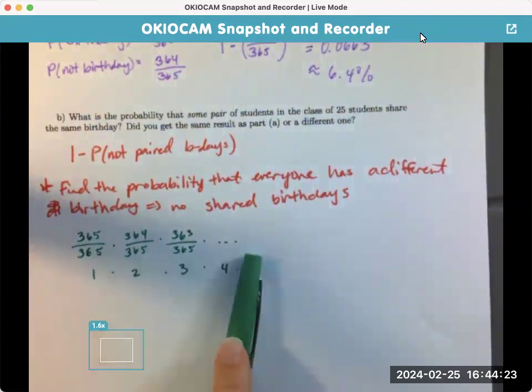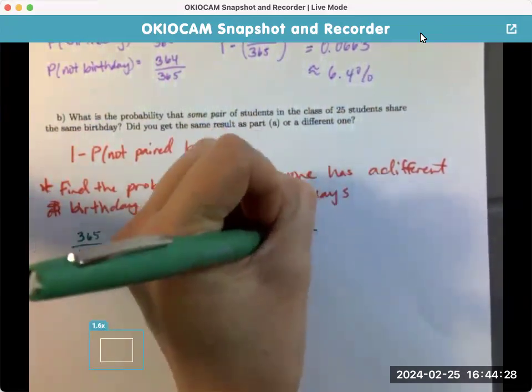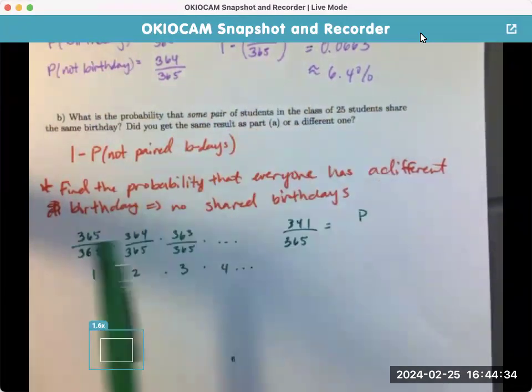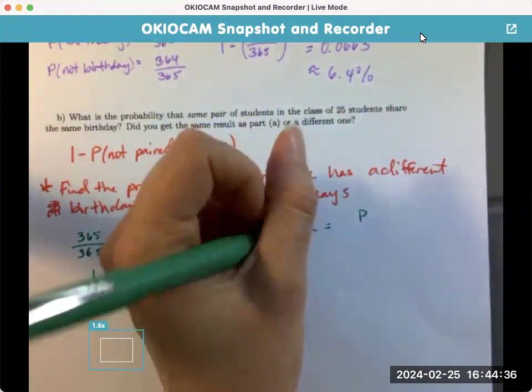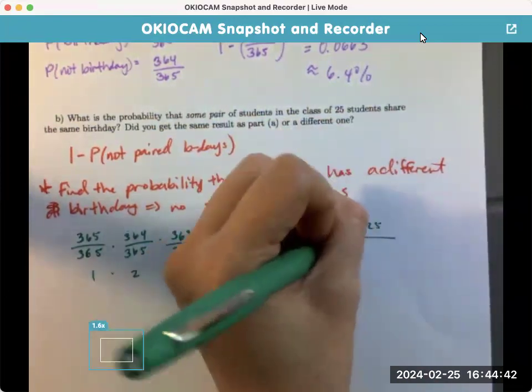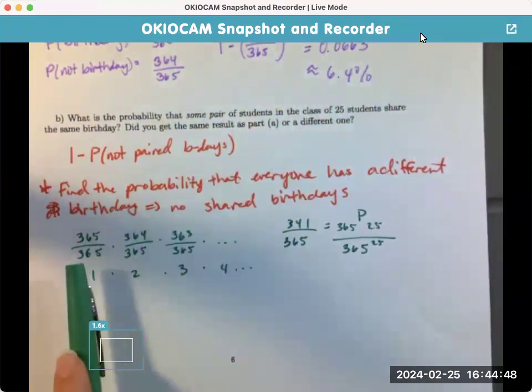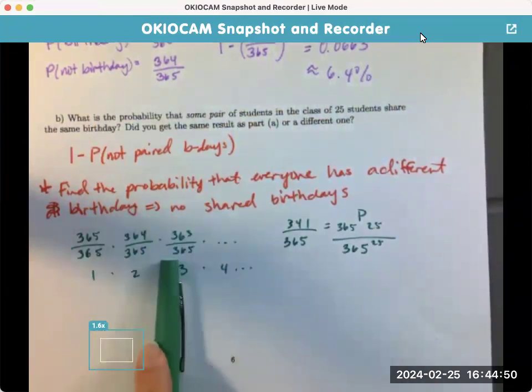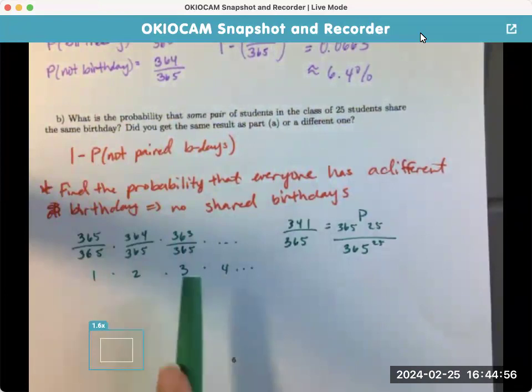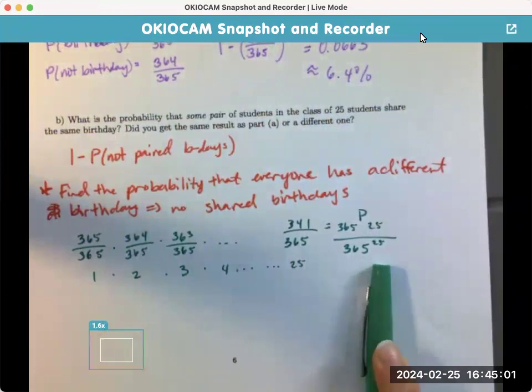Then, the second student, third student, all the way down to 25, right? So, that would be 341 over 365, or this is the permutation, because order matters, of 365 taken 25 at a time, divided by 365 to the 25th power, right? Because this is 365, 365, 365, because we're not taking birthdays away, right? On a calendar, there's 365 birthdays. So, this is your 25th student, right? So, that's 365 to the 25th.